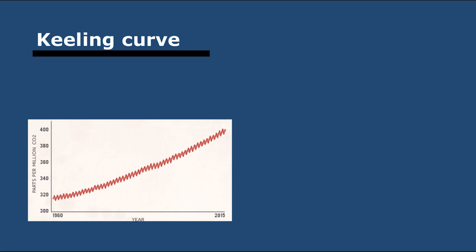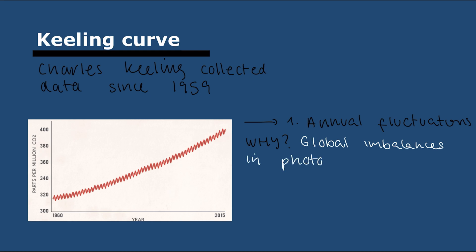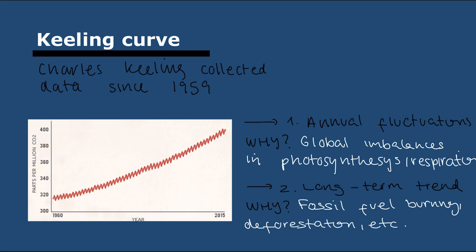Then we have the Keeling curve. Keeling was an American who did measurements on CO2 in the atmosphere since 1959. There's two main takeaways. First, there's annual fluctuations because of an imbalance globally between hemispheres in rates of respiration and photosynthesis. Second, there's a long-term trend upwards because of human interference—fossil fuel burning, deforestation, etc.—increasing CO2 dramatically over the years.